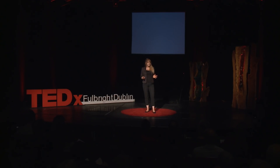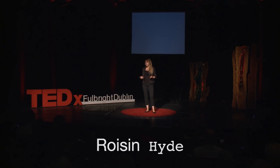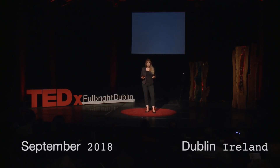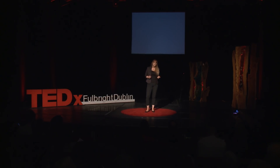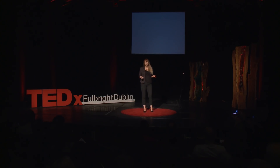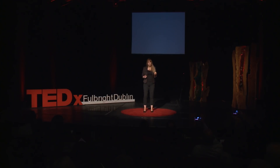If I were to ask you to guess what the most commonly used material was on our planet, some of you would probably say water, and you'd be right. But if I were to ask you what you thought was the second most commonly used material on our planet, you might think timber or plastic or even steel. So you'll probably be surprised when I tell you that it is in fact concrete.